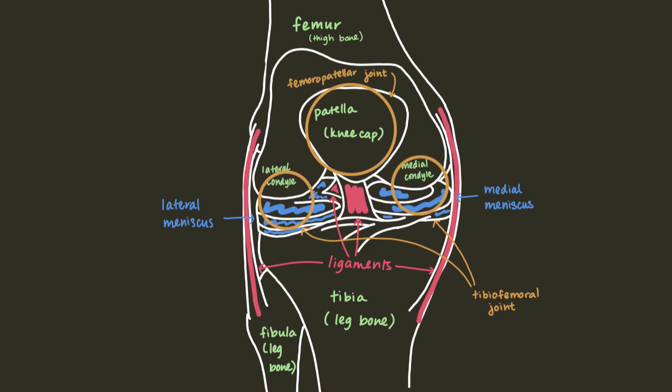one between the patella and the femur, or the femoropatellar joint, and two between the condyles of the femur and the lateral and medial menisci of the tibia. These two are known collectively as the tibiofemoral joint.